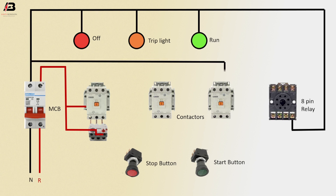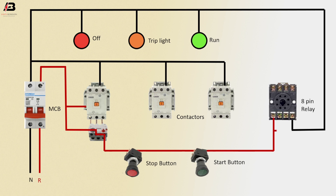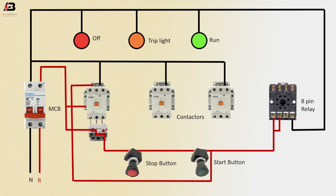Neutral connection outgoing and connect with magnetic contactor. Phase connection outgoing from relay and connect to stop button, start button, and 8-pin relay. Phase connection outgoing from relay and connect to magnetic contactor overload relay.